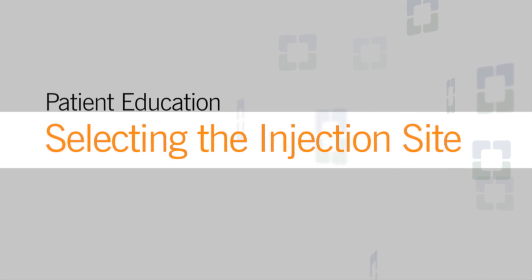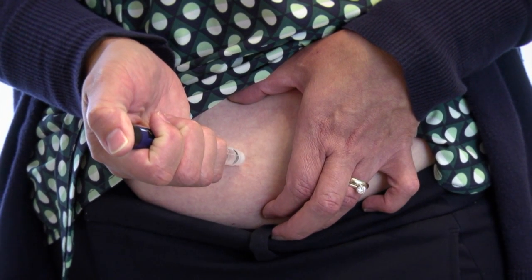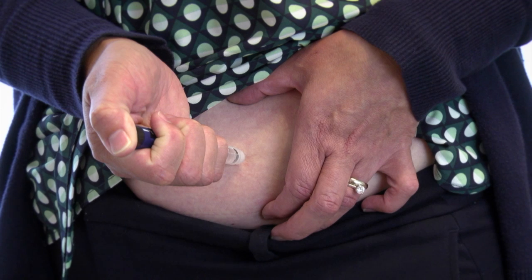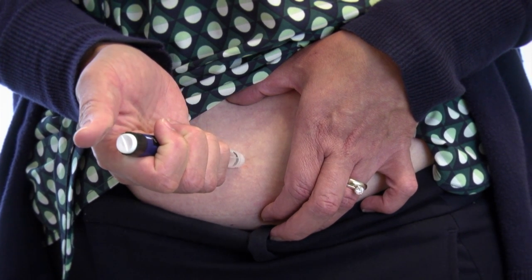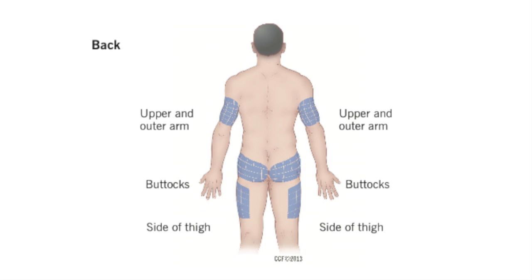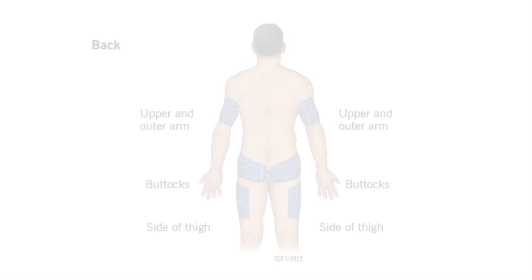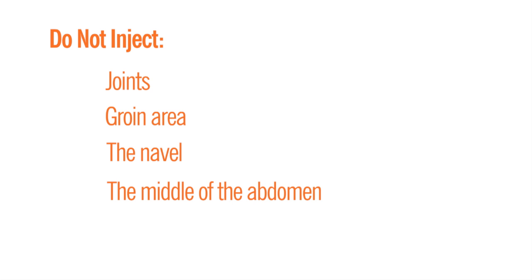Since you will be injecting your insulin on a regular basis, you need to know where on your body to inject it, and you will need to learn how to rotate or switch your injection sites. Recommended injection sites include the abdomen, front and side of the thighs, upper and outer arms, and buttocks. Do not inject near joints, the groin area, the navel, the middle of the abdomen, or scar tissue.